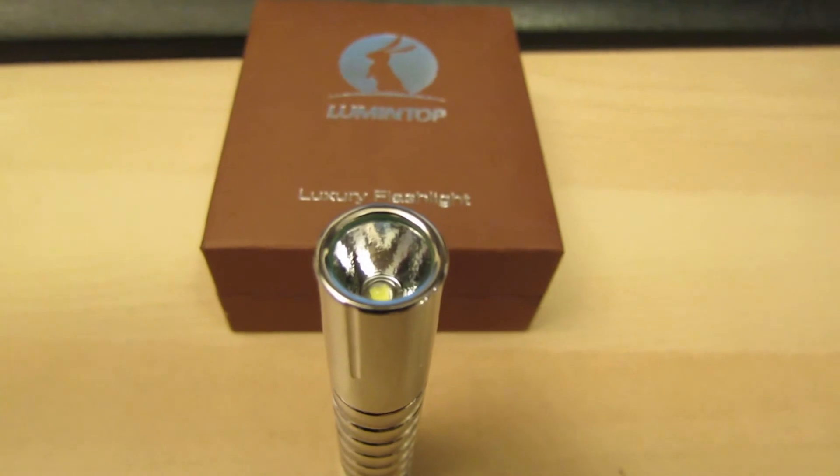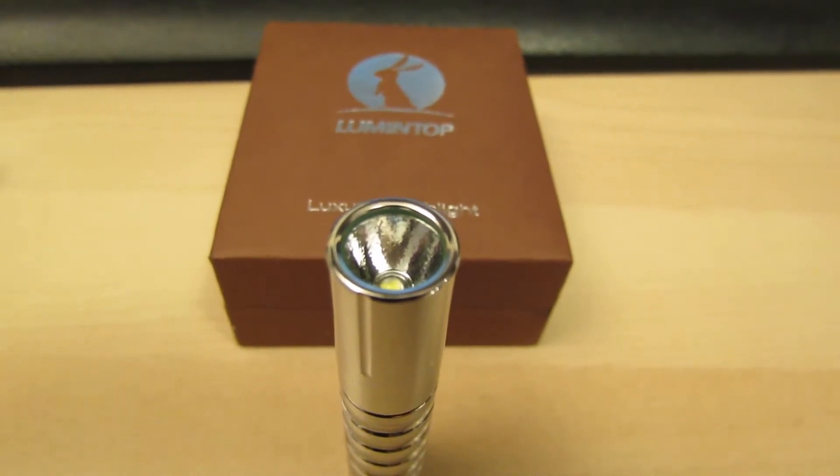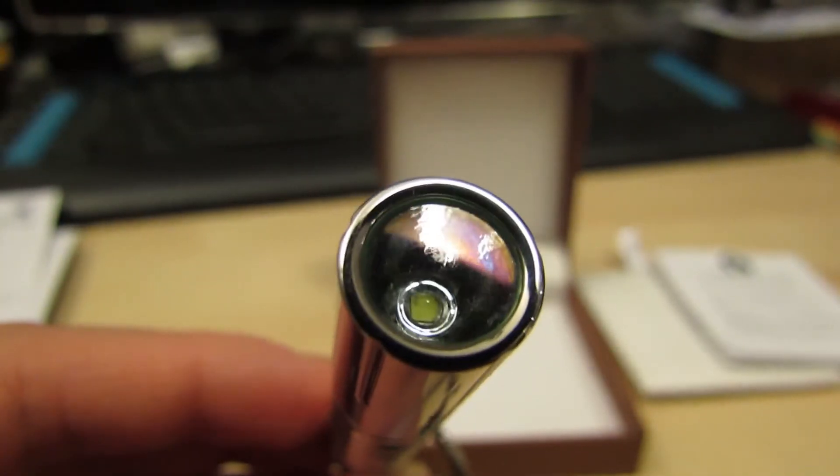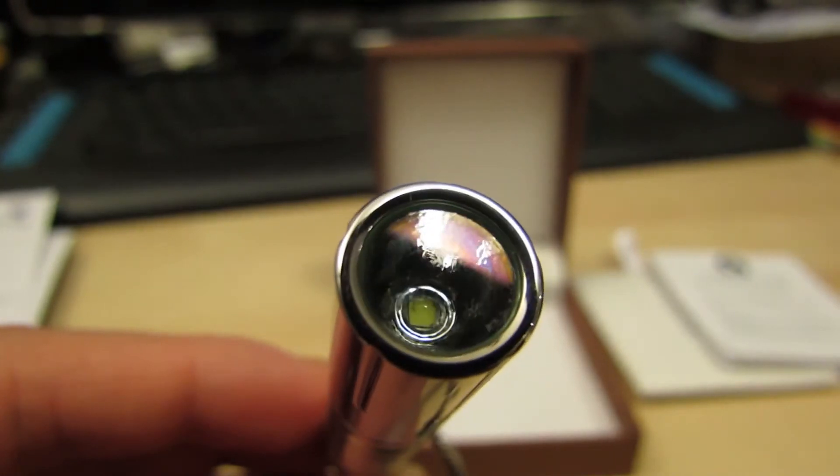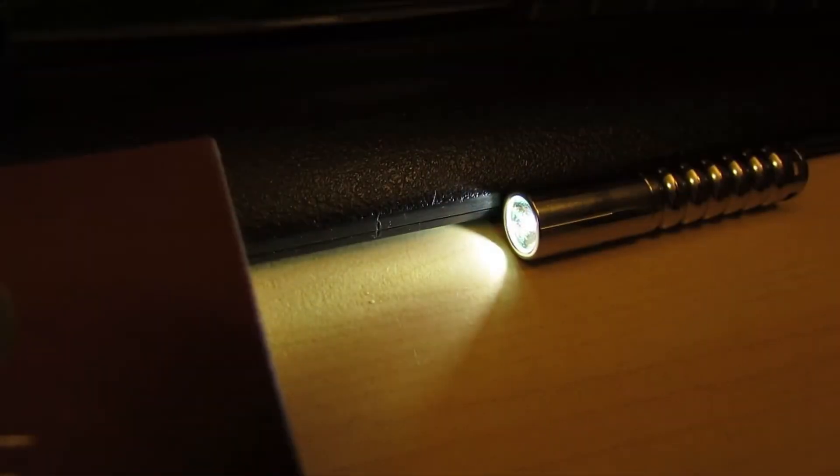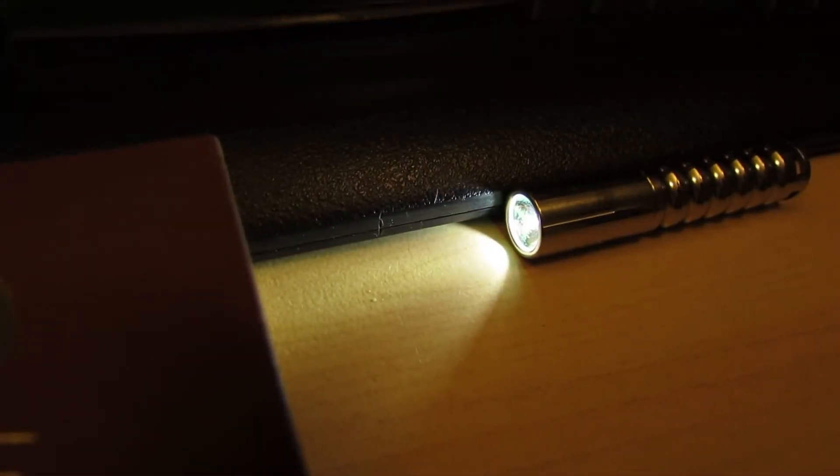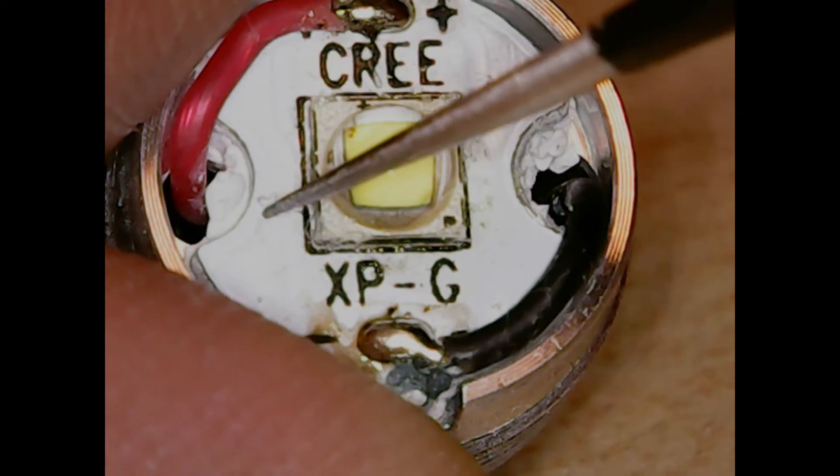It has a high reflectivity orange peel reflector. It has a glass lens that has an anti-reflective coating. It has high quality threads and a nice o-ring. It has a nice driver that doesn't flicker in low or medium which shows that it has a high frequency pulse width modulation, probably above 1000Hz or more.